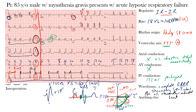Lastly, regarding the QTc interval: this runs from the beginning of the QRS complex to the end of the T wave. We typically use the Bazett formula to correct for heart rate. The normal QTc in males is less than 440 milliseconds. In this male patient, the QTc interval was 504 milliseconds — clearly prolonged, well above that 440ms upper limit of normal.